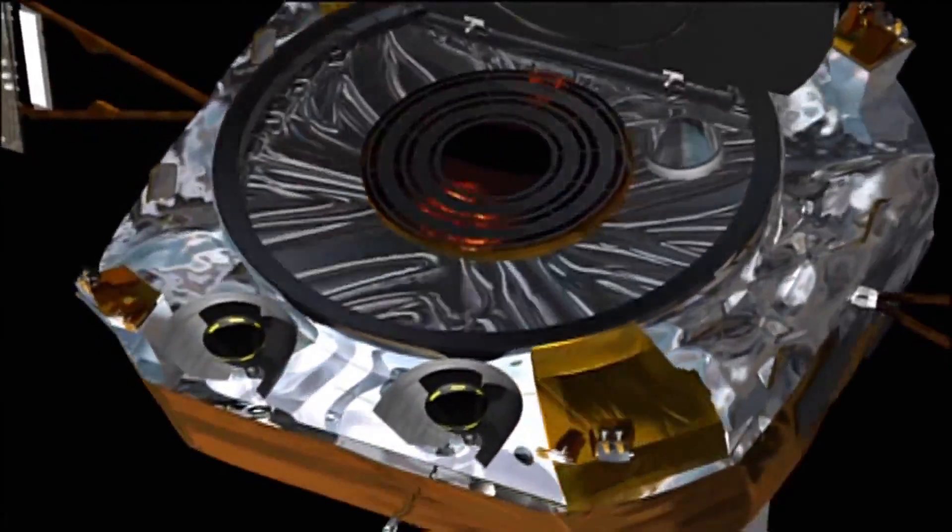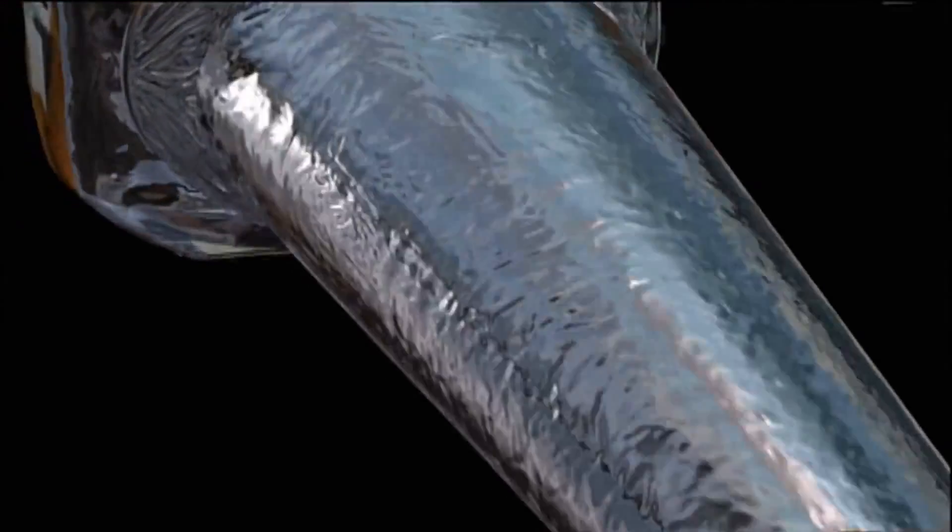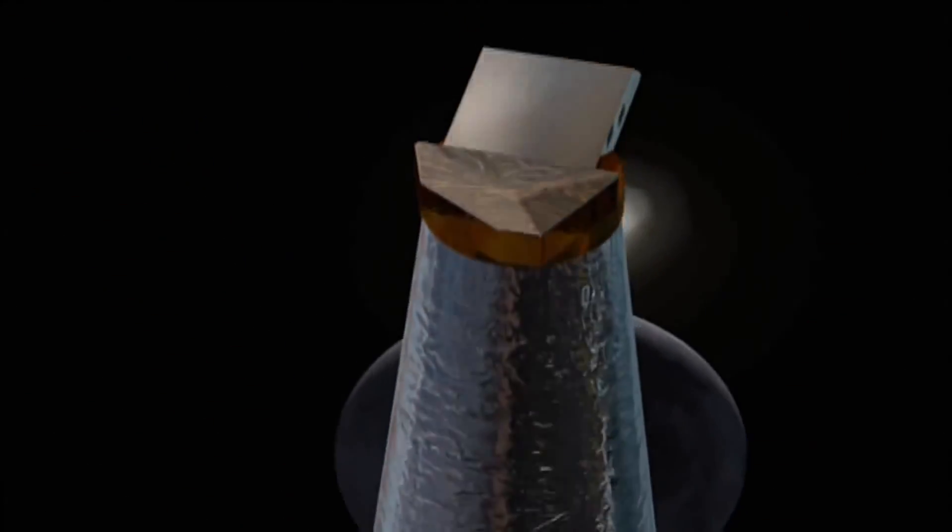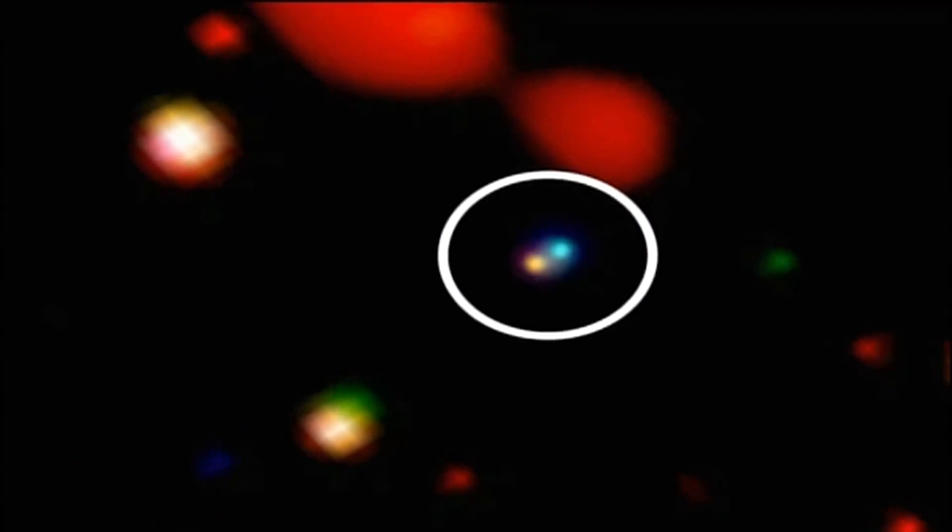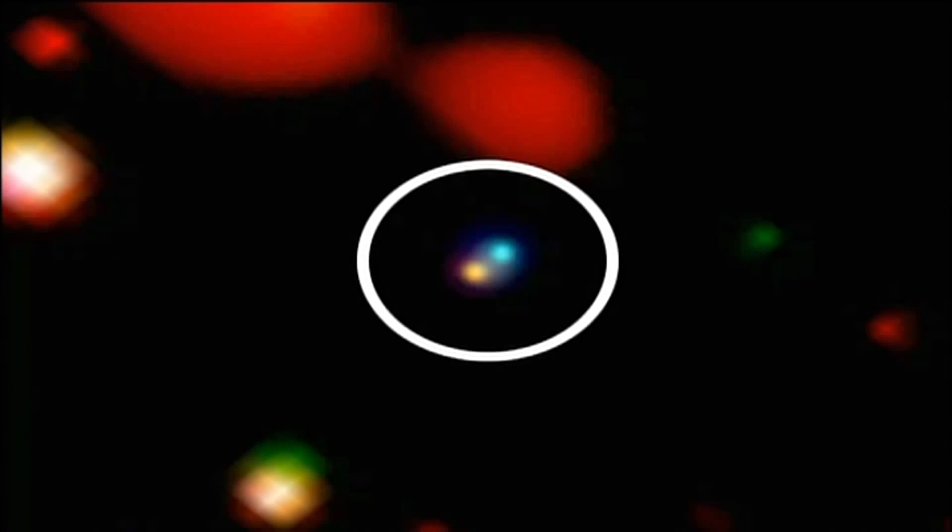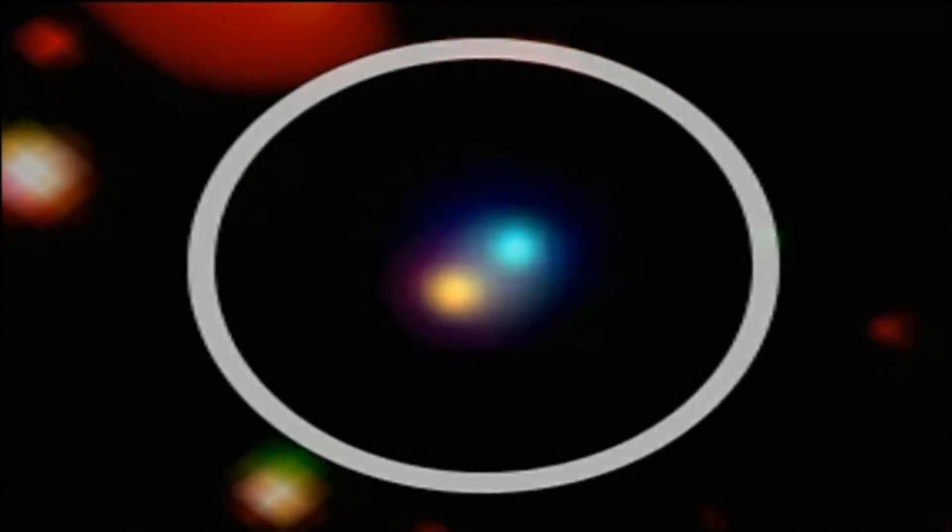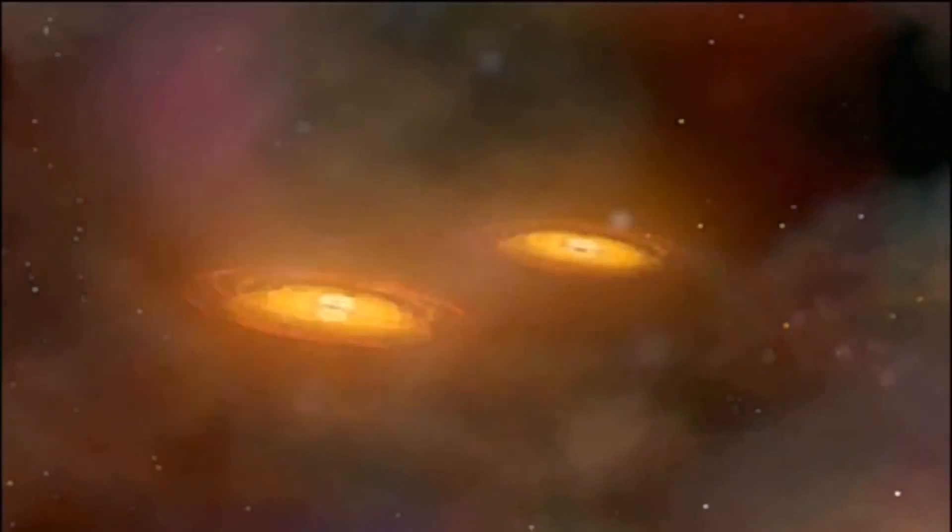The orbiting Chandra X-ray Observatory recently turned up evidence at the centers of galaxies back in the time of the early universe. These images show its remarkable find: actual supermassive black hole pairs beginning what astronomers believe is a dance of death.